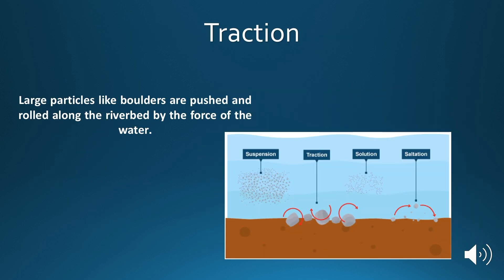First is traction. Traction involves larger particles, such as boulders, being rolled along the bottom of the riverbed. You can imagine how heavy a larger boulder or bedrock is, and therefore this method is most common when the river has a lot of energy, such as when the river is in flood.